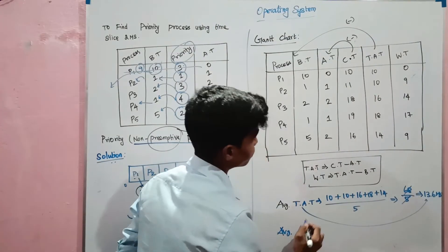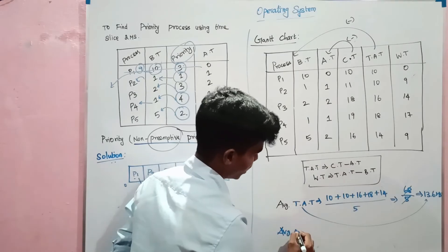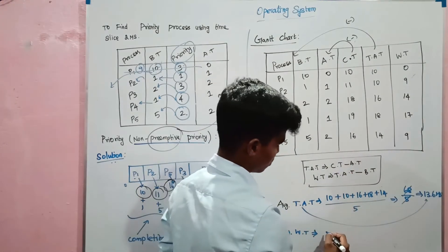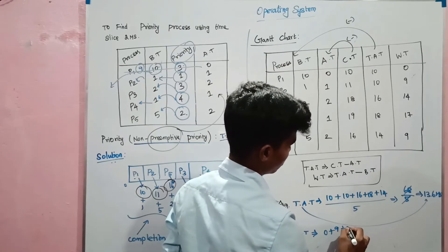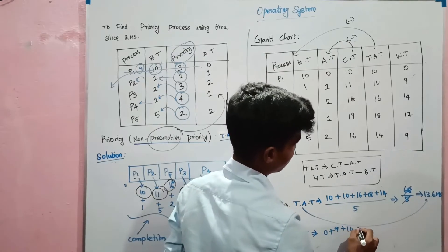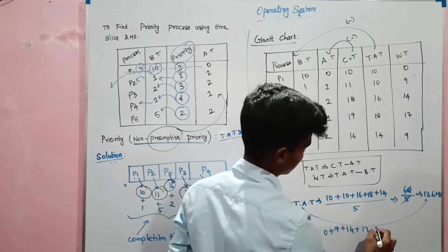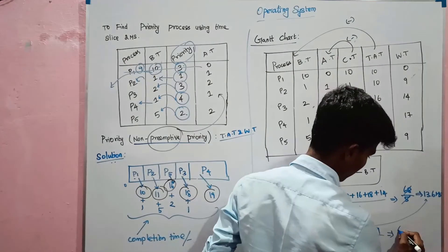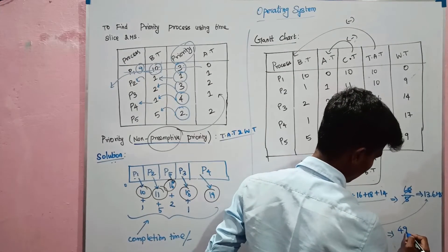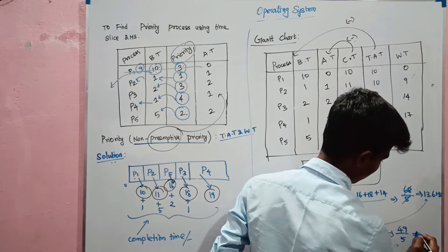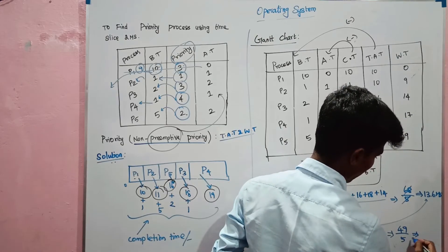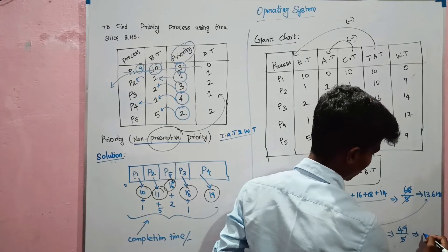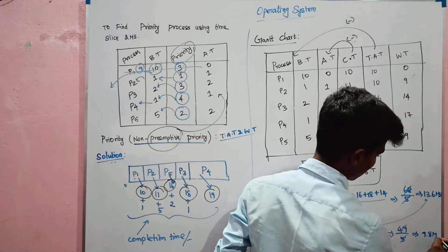Average waiting time: using the standard formula, 0 plus 9 plus 14 plus 17 plus 9, divided by 5. That equals 49 divided by 5 equals 9.8 milliseconds. Average waiting time is 9.8 milliseconds.